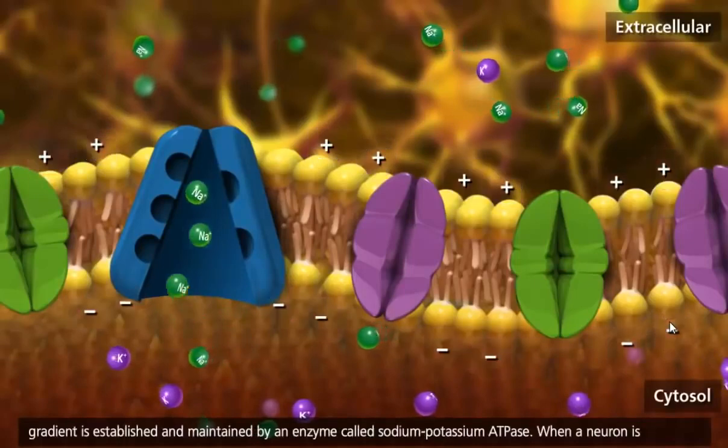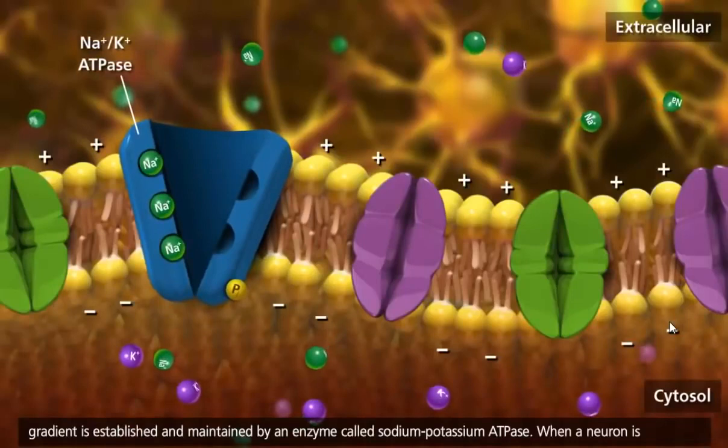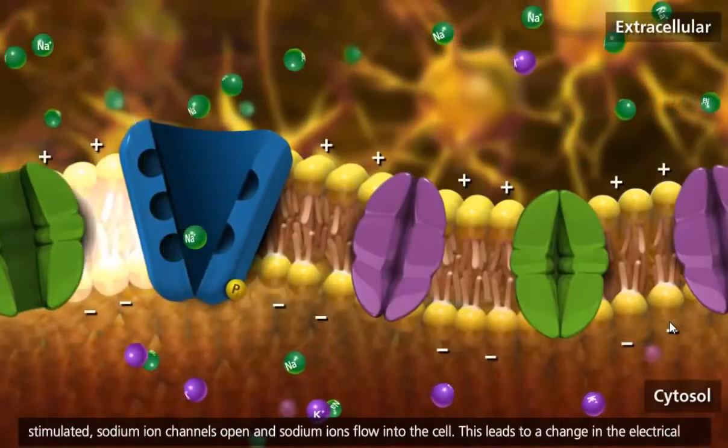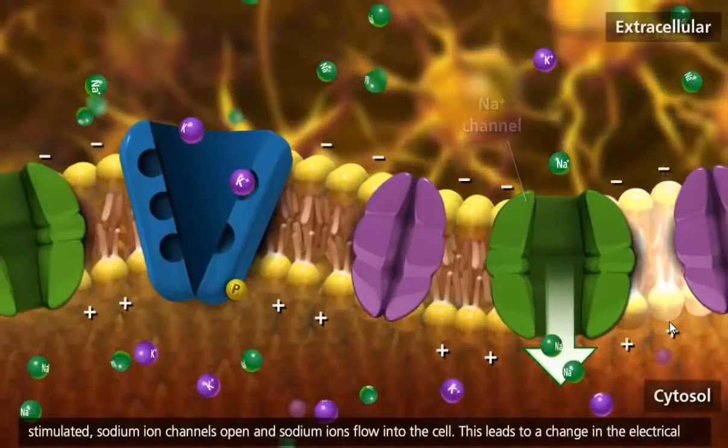The electrochemical gradient is established and maintained by an enzyme called sodium-potassium ATPase. When a neuron is stimulated, sodium ion channels open and sodium ions flow into the cell.